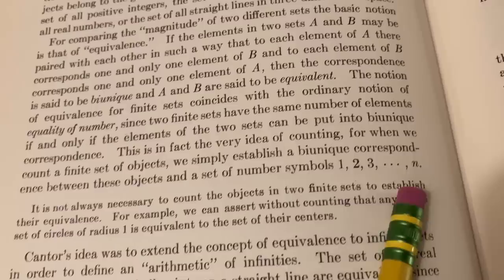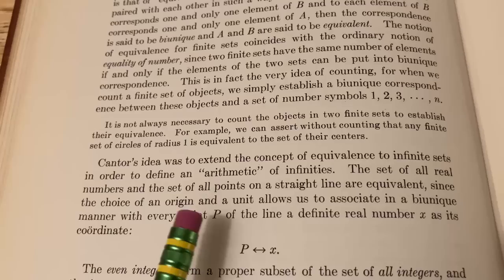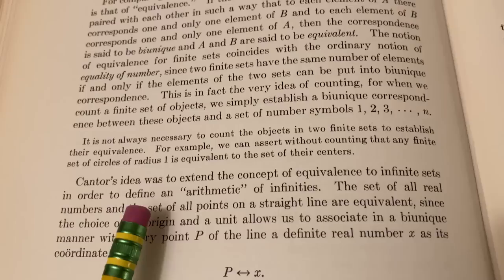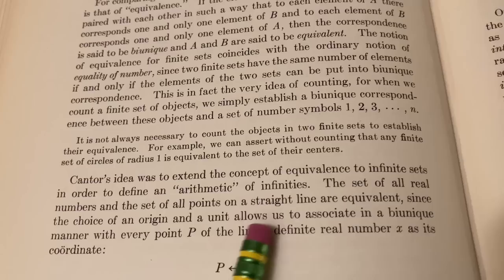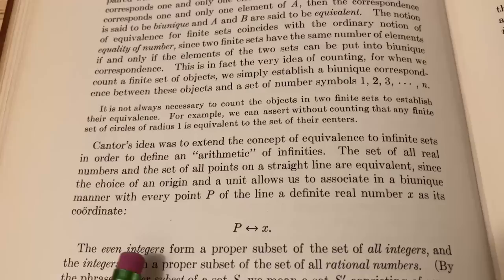And here he goes on to talk about infinites. He says, Cantor's idea was to extend the concept of equivalence to infinite sets in order to define an arithmetic of infinities. The set of all real numbers and the set of all points on a straight line are equivalent since the choice of an origin and a unit allows us to associate in a bi-unique manner with every point P of the line a definite real number X as its coordinate. Then here he talks about the integers and he goes on to show that the set of integers is equivalent to the set of even integers.